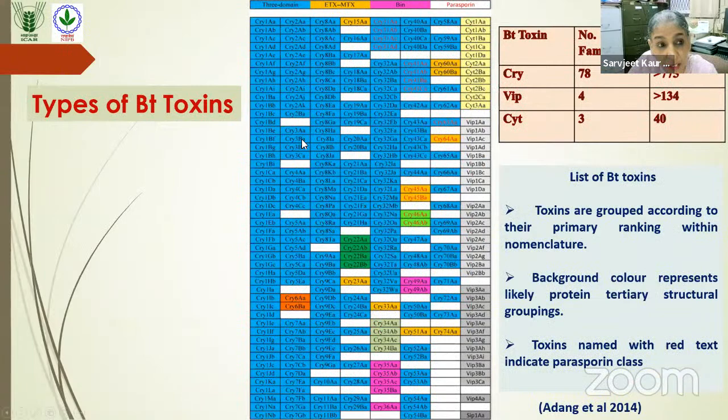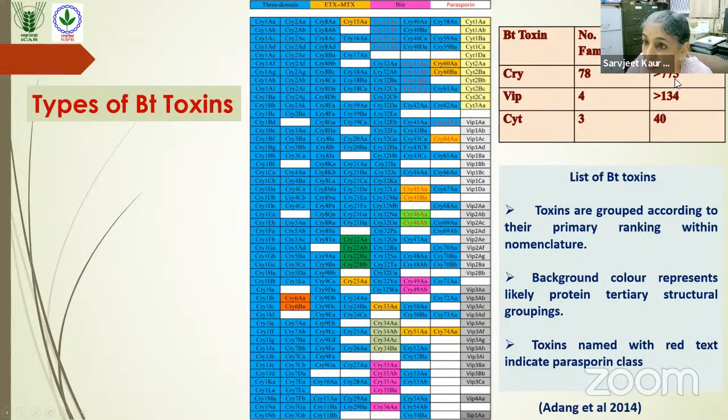This slide lists the different kinds of Bt toxins now known. Currently there are up to 78 different primary Cry families with more than 750 genes. The Vip families are 4, having more than 134 genes. The cytolytic proteins have three families with more than 4 genes.